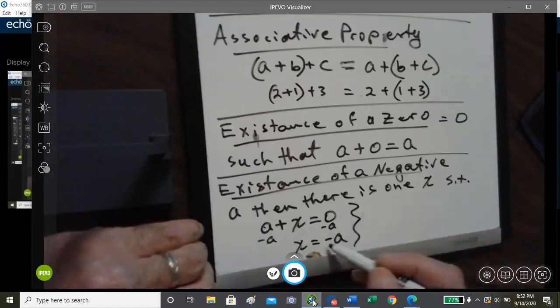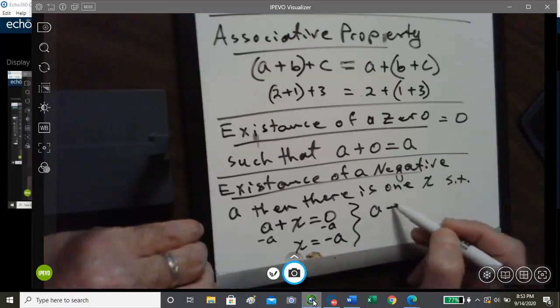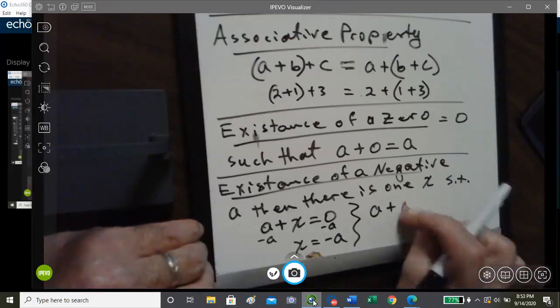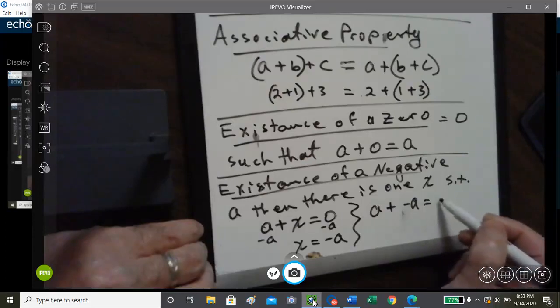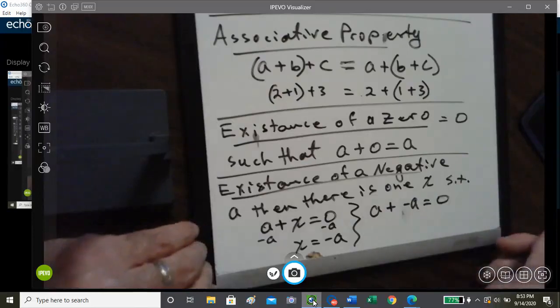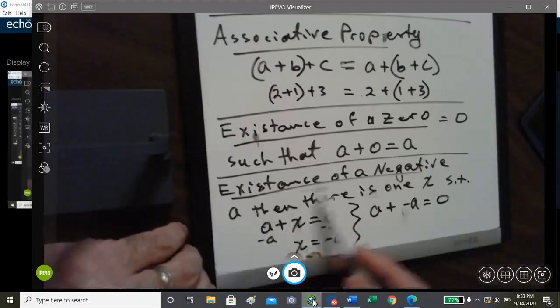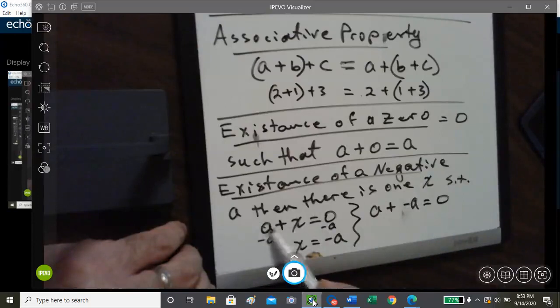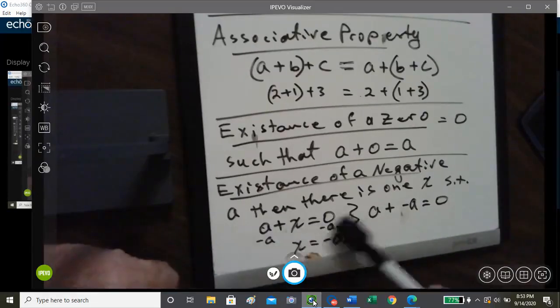Okay, so that if we substitute negative A back into X, A plus negative A, we get zero. So the existence of a negative: A plus some number unknown equals zero, then we have some negative that makes it zero.